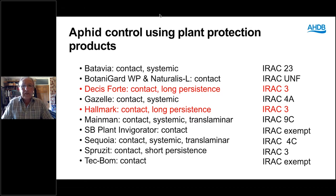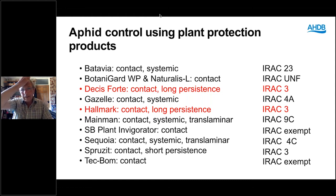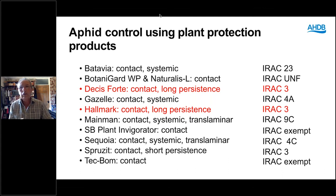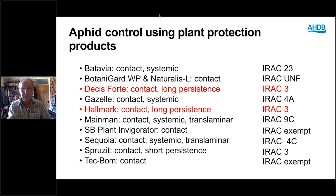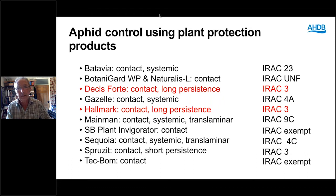Finishing on aphid pesticides: a couple are highlighted in red — not to say you can't use them, but these are the ones which will destroy your biocontrols. IPM-compatible products include Batavia, Botanigard, Gazelle, Mainman, Invigorator, Sequoia, Spruzit, and Tecbomb — very useful and they integrate with the biologicals. Note that Tecbomb currently does not have an ornamentals approval. It has protected edible crops on label and they are waiting for approval for protected ornamental crops.